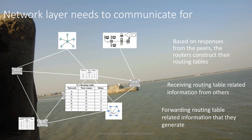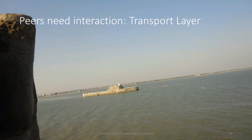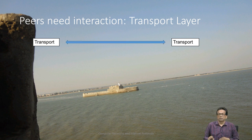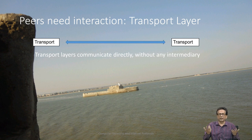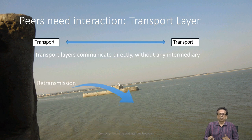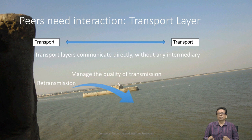Looking at the routing table, you can decide where the incoming packet is to be headed. Transport layer peers need to interact for many reasons. We have already seen that for reliability, it has to communicate to check whether the segment is received or not, get back the acknowledgement, and so on. Transport layer is very critical because it talks to the other end directly. Retransmission is the first thing, and that is the job of the transport layer.